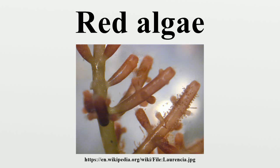In a simple case, such as Rhodochorton investiens, in the carposporophyte, a spermatium merges with a trichogyne, which then divides to form carposporangia, which produce carpospores. Carpospores germinate into gametophytes, which produce sporophytes. Both of these are very similar.